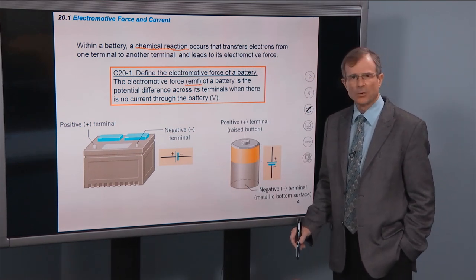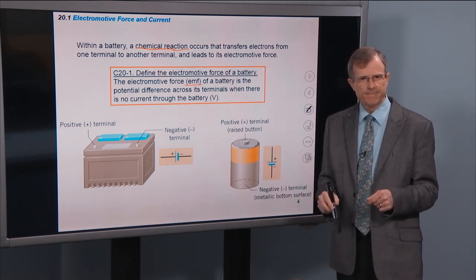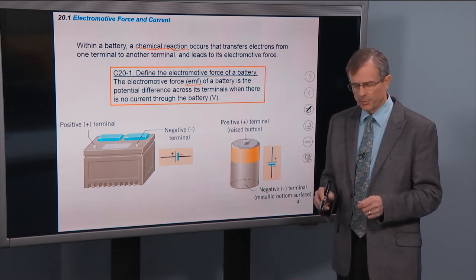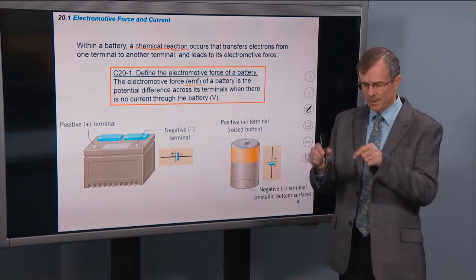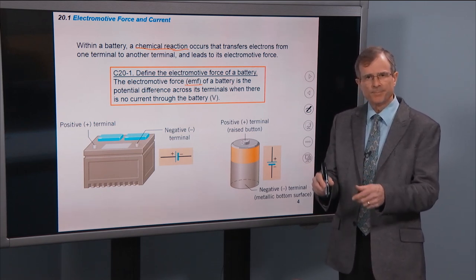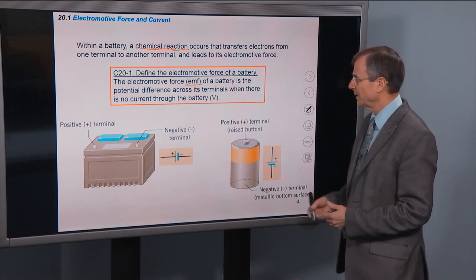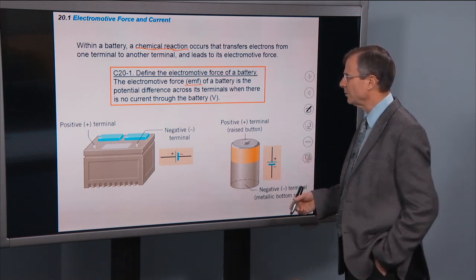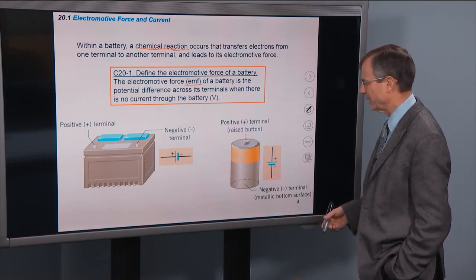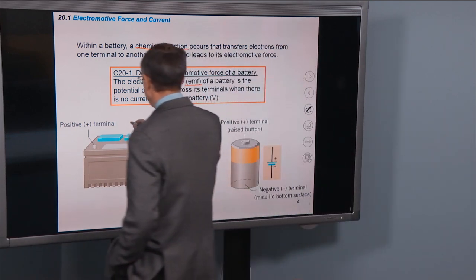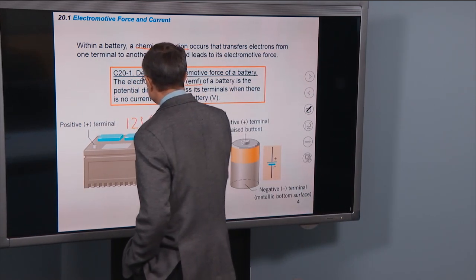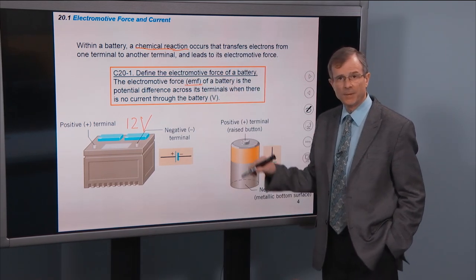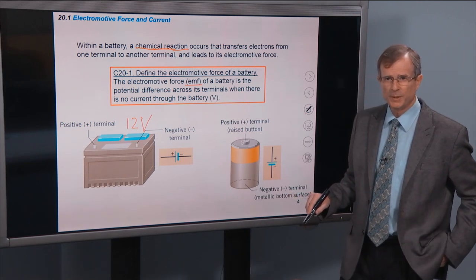The electromotive force of a battery, called the EMF, is the potential difference across the terminals of the battery when there's no current through the battery. So if you were to take a voltmeter — which measures the voltage across the battery — and there's no current in the battery, then that terminal voltage is equal to the electromotive force. For a car battery it would be 12 volts, and for regular batteries, one and a half volts between the terminals.